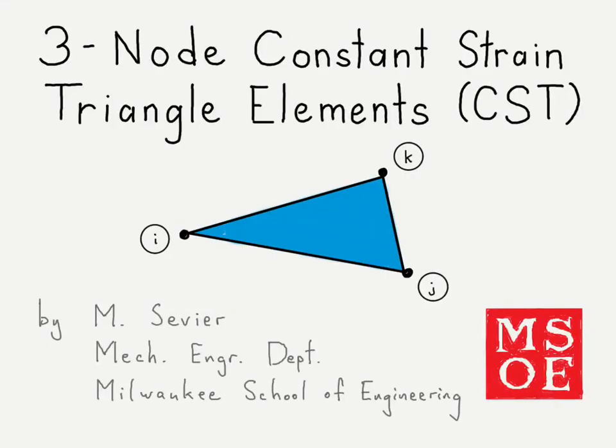This video is going to take a look at the three-node constant strain triangle element, which is the first planar element we're going to examine after looking at one-dimensional elements such as the truss, beam, and frame elements.